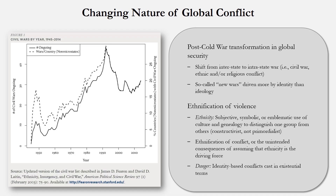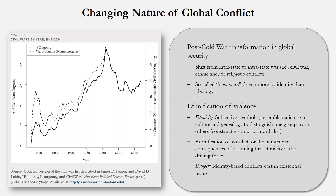Reading one starts by discussing the changing nature of global security in the post-Cold War era. Traditionally, wars were fought between two or more sovereign states — that's what is referred to as interstate warfare, as distinct from intra-state warfare, the latter of which takes place within the borders of a sovereign state. This includes civil wars, but other forms of conflict as well.